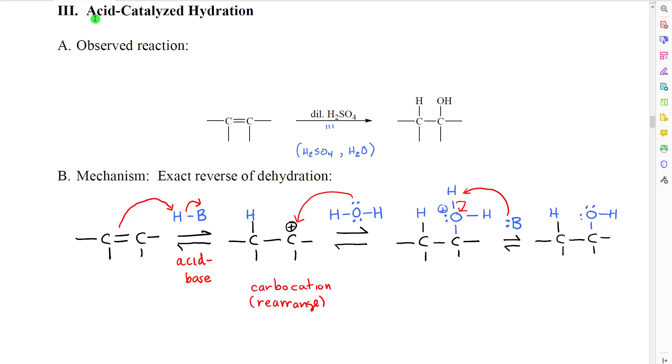We're going to look at three different sets of conditions for doing this that each have their own particular characteristics and uses. The first one we're going to look at is what is called acid-catalyzed hydration. The observed reaction looks something like this. We start with an alkene.